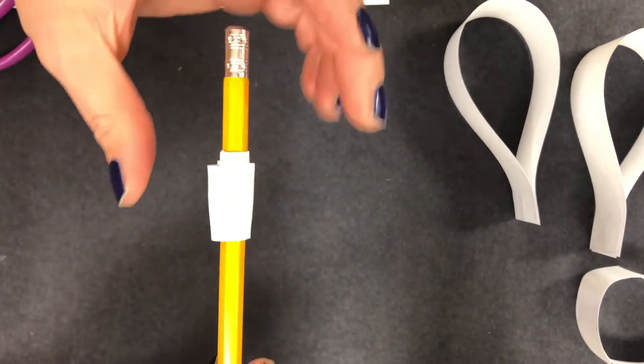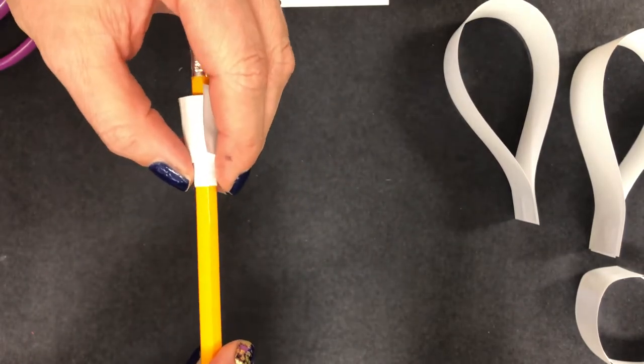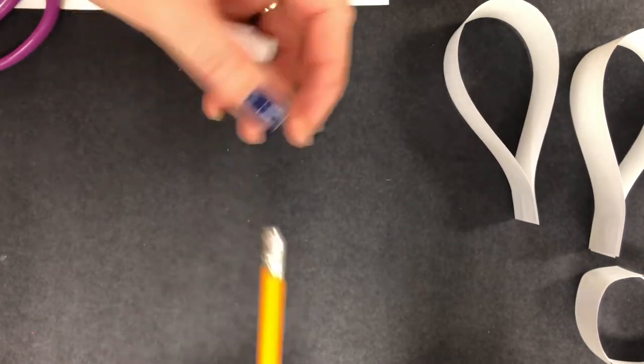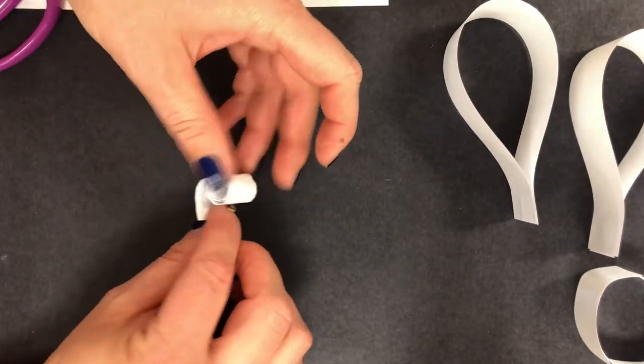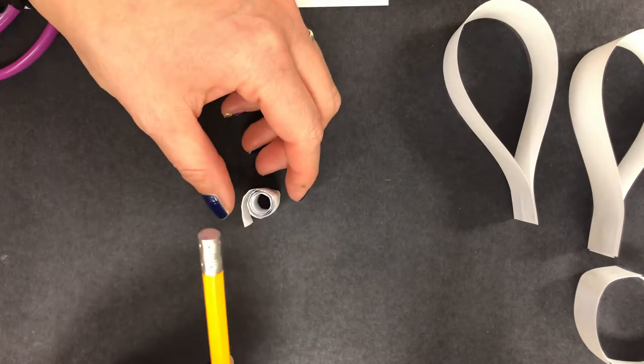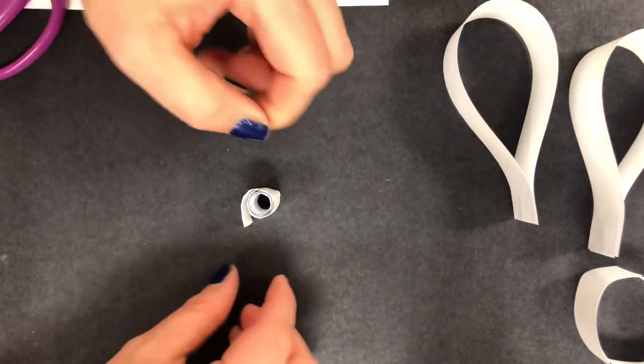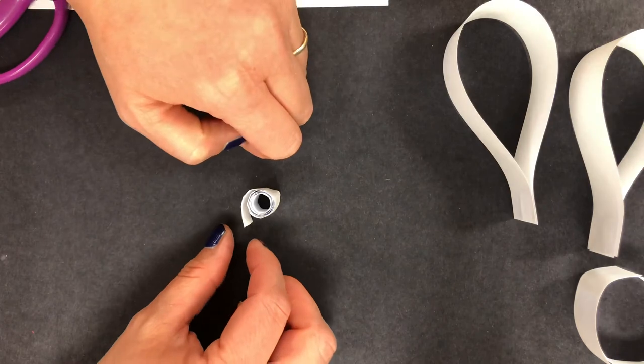Then I'm going to let go and pull my curl off. So right now this curl is very tight. It didn't even really change from the width of the pencil when I took it off. So if I want to loosen this curl up now...